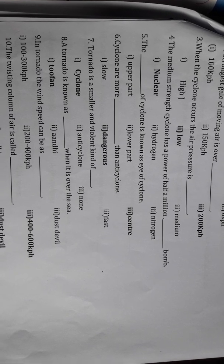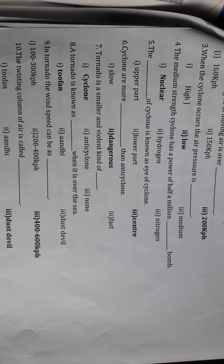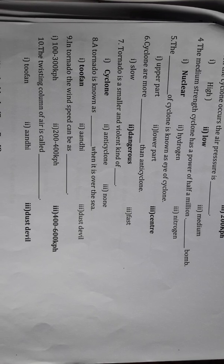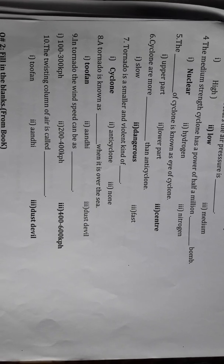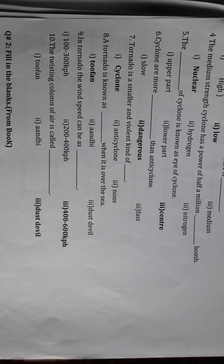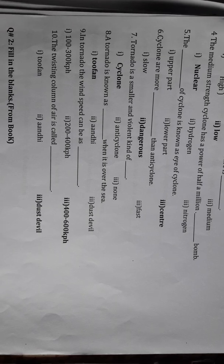A tornado is a smaller and more violent kind of cyclone. A tornado is known as a waterspout when it is over the sea, and the wind speed can be as much as 400 to 600 kilometers per hour. The twisting column of air that sucks up dust is called a dust devil.